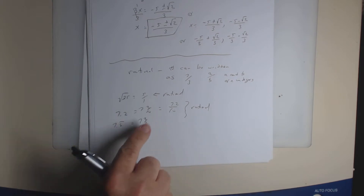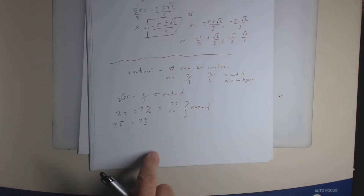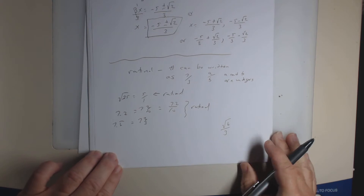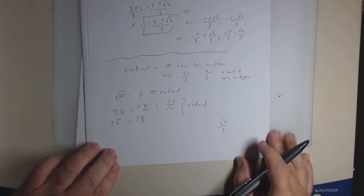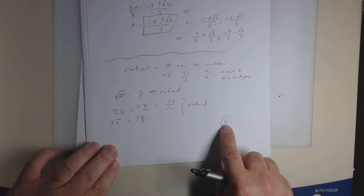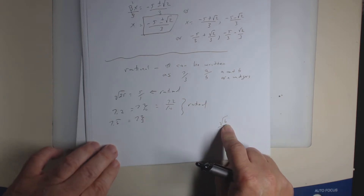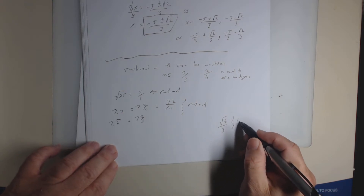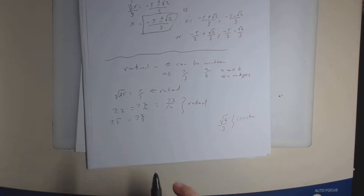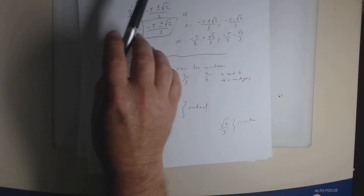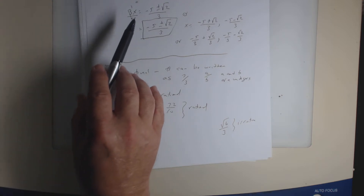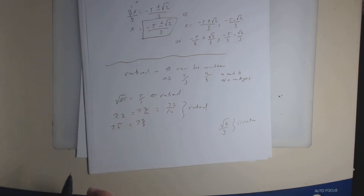So if a number cannot be written as a fraction — meaning an integer divided by an integer — then it's irrational. For example, the square root of 6 over something looks like a fraction, but it's not rational because the square root of 6 is not an integer. If you put the square root of 6 in your calculator, you get a decimal that doesn't terminate or repeat. So basically, when you solve these quadratic equations by taking a square root, if your answer still has a square root in it, then it's going to be irrational.